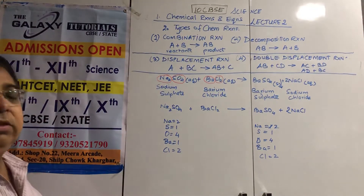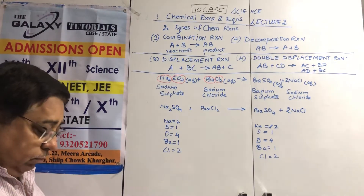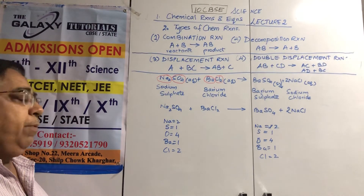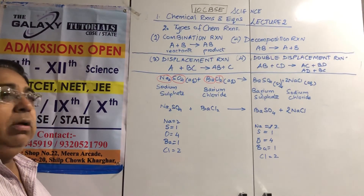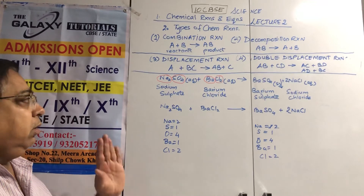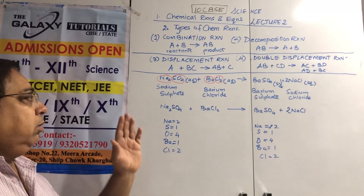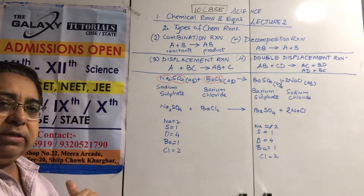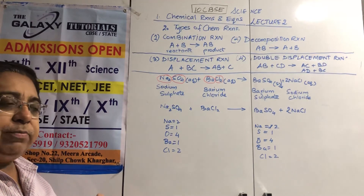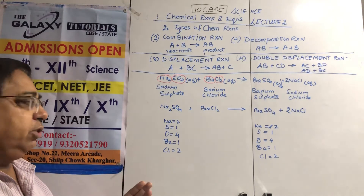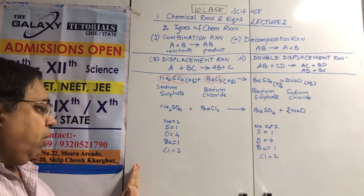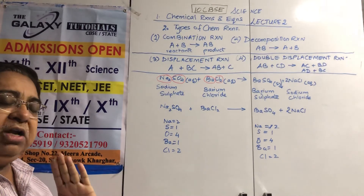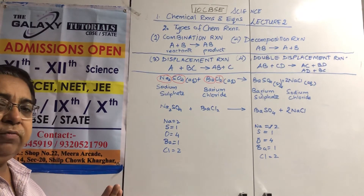I suggest you make a list on a piece of paper: compound name and compound formula for every compound in this chapter. Until you study the periodic table and valencies, learn the formulas — it will definitely help you whenever you are confused, in a hurry, or tense in an exam.